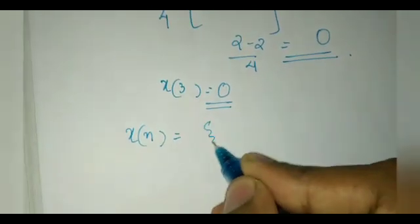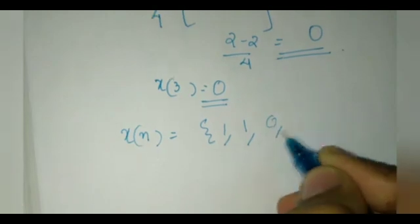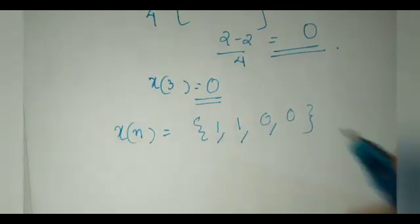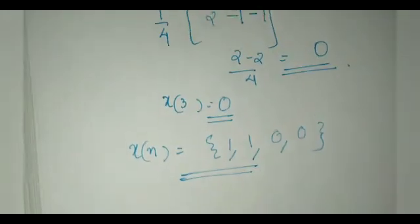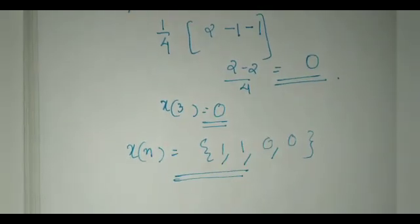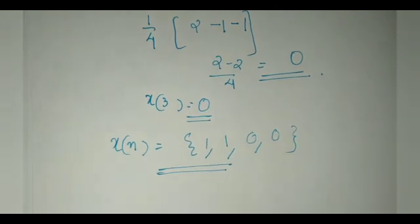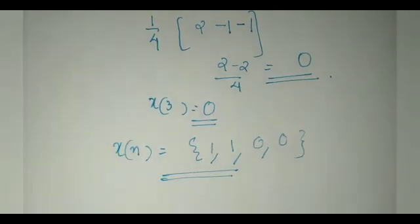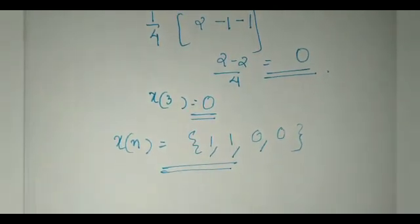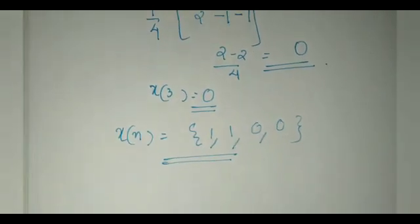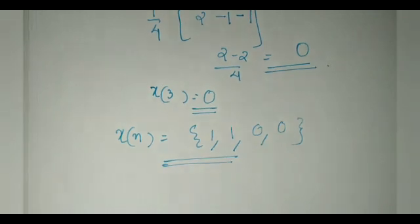So your x of n sequence is the set {1, 1, 0, 0}. This was your initial input for the DFT. It is clear that the IDFT gives you your original input sequence without any loss. This is how you perform the IDFT.